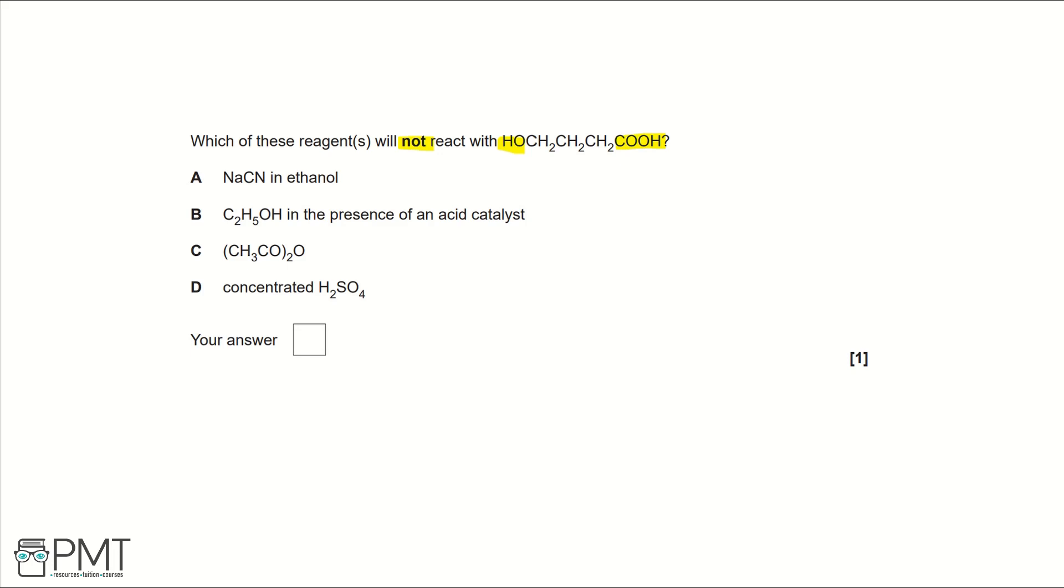Starting at A: we have NaCN in ethanol. These are the reagents to turn a haloalkane into a nitrile. Looking at what we have as our functional groups, we don't have a haloalkane so these reagents won't work.